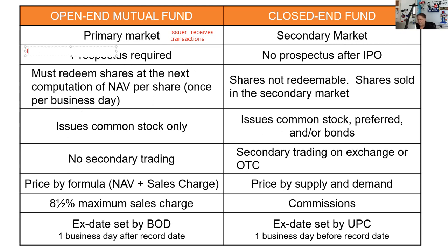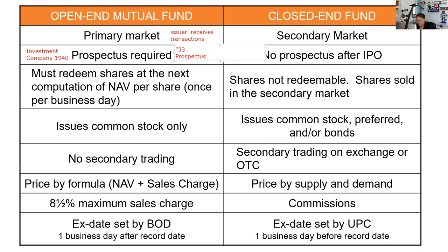That means not only does the mutual fund have to comply with the Investment Company Act of 1940, the mutual fund is also going to have to comply with the Securities Act of 1933. The 1933 Act is called the Prospectus Act — if you're selling brand new securities to the public, you need to give people prospectuses. Sometimes we refer to this as the Paper Act. If they're asking about paper prospectuses, that's 1933; if they're asking about people and places, that's 1934.